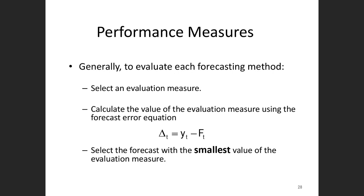When we make a forecast, we need to find the difference between the forecast value and the actual value. For example, if today I predict there will be rain and it rains, the forecast is good; if not, it is not good. Similarly, if we forecast a maximum temperature of 35 degrees centigrade and it is around 34 or 36, the forecast is comparatively good. If instead it is 24 or 25, there is a much larger error.